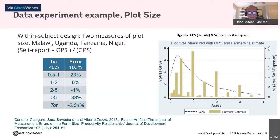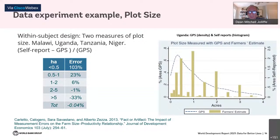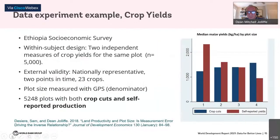Compared to the common assumption that self-reported measurement error might just be white noise — which would lead only to attenuation bias — the systematic error leads to very different types of biases in parameter estimates. An important part of this validation exercise was also demonstrating that handing out cheap GPS tools was a very cost-effective way of gathering significantly more accurate data on plot size, a central measure of farmer well-being.